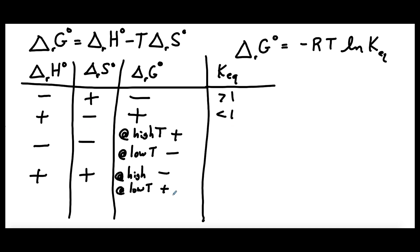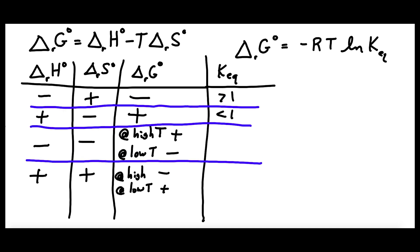But for the other two scenarios — both signs negative, or both signs positive — K actually depends on temperature. For the case with both delta H and delta S negative: at high temperature it's unfavorable, so K is small, while at low temperature K is large. And for the endothermic positive delta S case: K is large at high temperature and small at low temperature. These two classes of reactions are the ones that have a crossover temperature, going from a large equilibrium constant to a small one or vice versa as temperature changes.